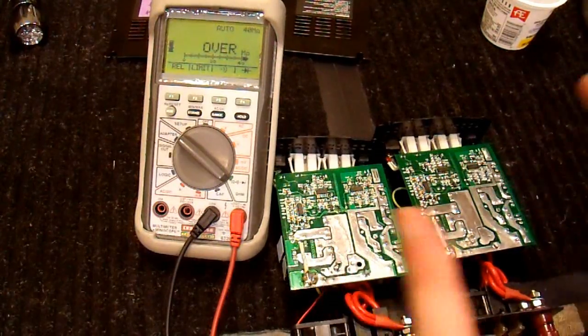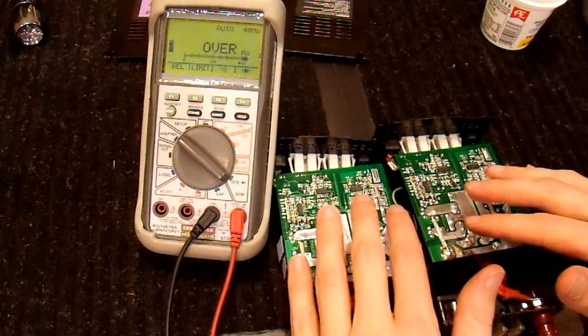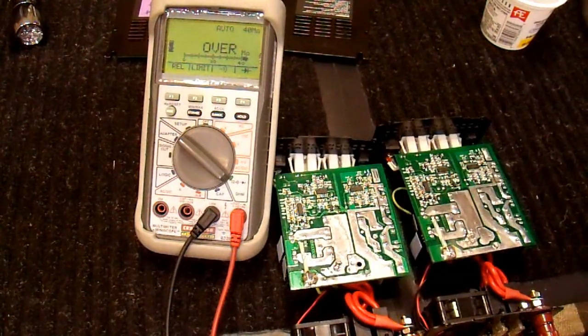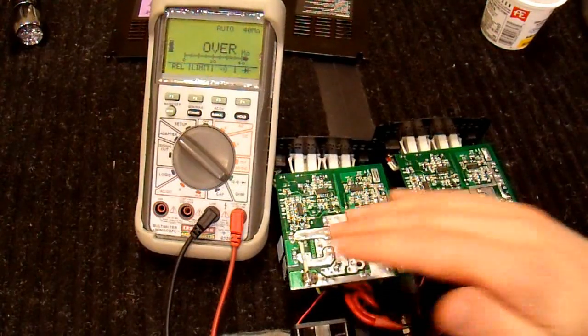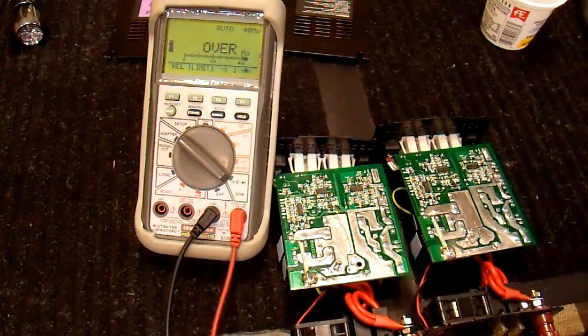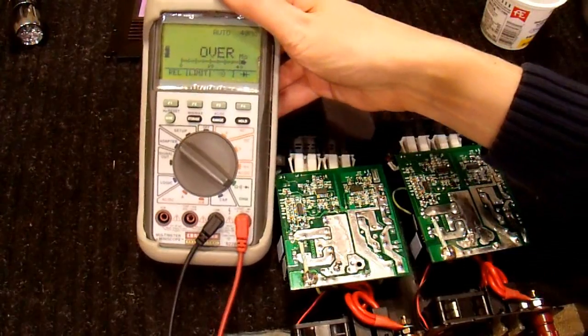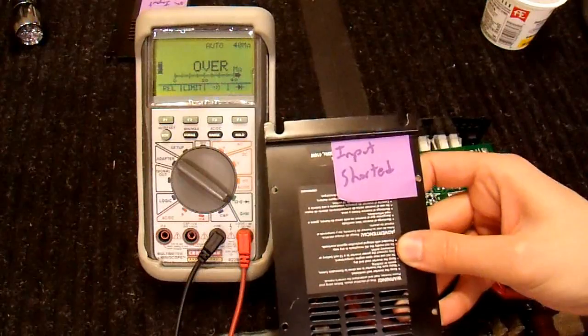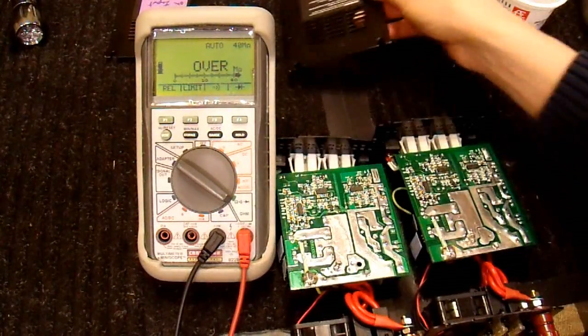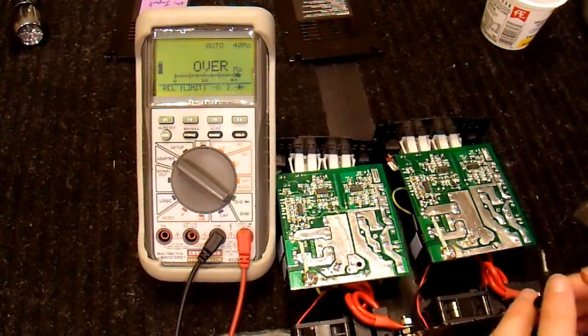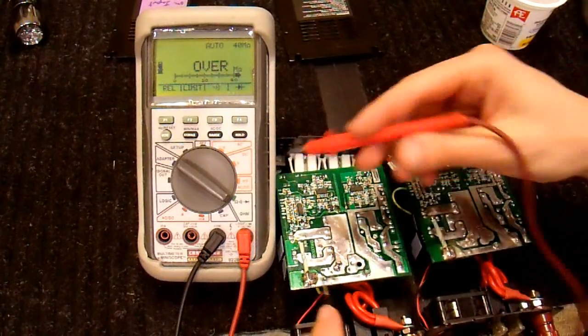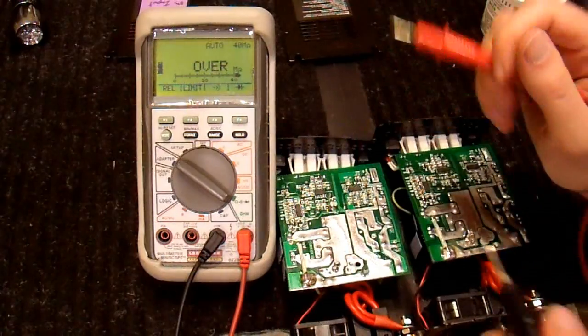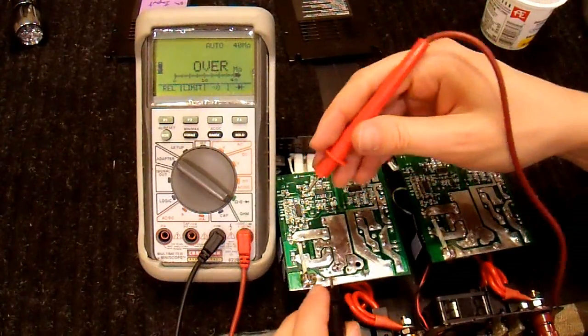And through the magic of editing, we have both of the inverters here with the cases removed. And we can now see the input stage and output stage of each one. And we're going to check to see what is shorted on the input stage because these say input shorted. And I verified that the input was indeed shorted on these two inverters. So, the input stage on these is pretty simple. It is two FETs, one here and one here. So, we're going to check and see which FET or both is shorted.